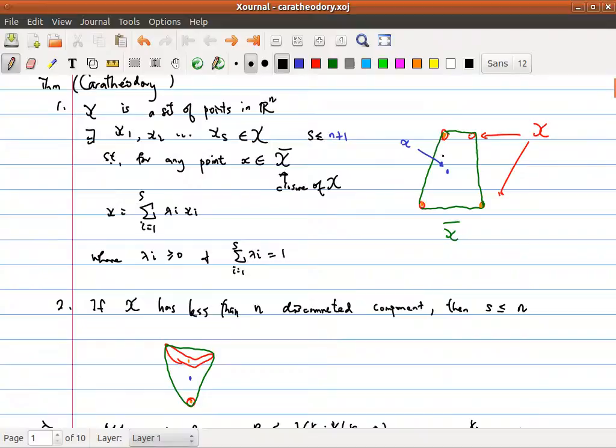we have x instead of a set of points - x is composed of less than n disconnected components. In this case, for example, I have a two-dimensional space and n is equal to 2. I have x basically composed of this portion and this portion. If we consider the convex closure of x, it's basically here, and we pick any points inside the convex closure.